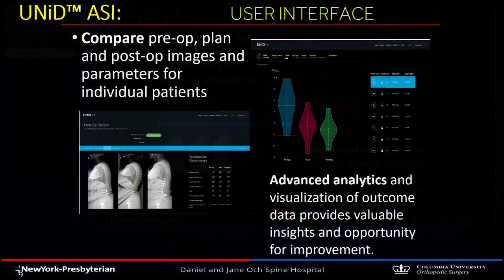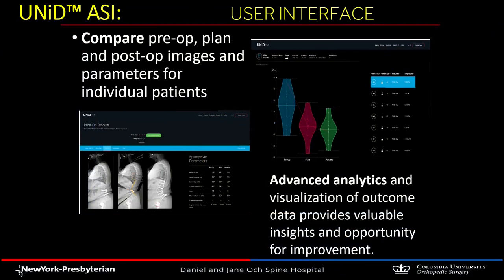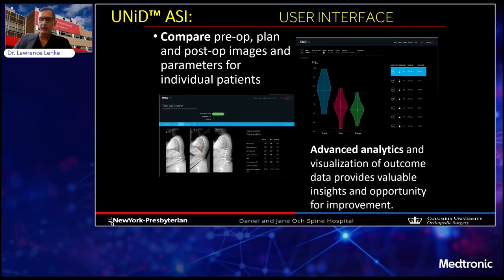There's a very nice user interface that compares your pre-op x-rays, your plan, and post-op images, and also provides parameters for your patients to understand exactly where you're falling relative to your various sagittal alignment targets — your PI-LL, your TPA, pelvic tilt, and things like that. You understand exactly whether you've met your target and goals, and these are all produced for you in advanced analytics in a platform that you can easily review in a study.